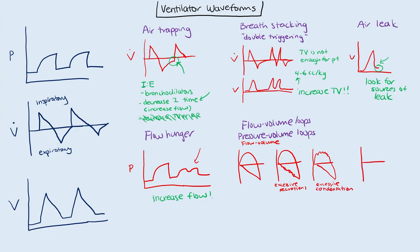And then finally, in patients with severe obstructive lung disease, what you're really going to see is this kind of scooped appearance, and that's going to be a sign of airway obstruction. So if somebody has severe asthma, COPD, or emphysema.